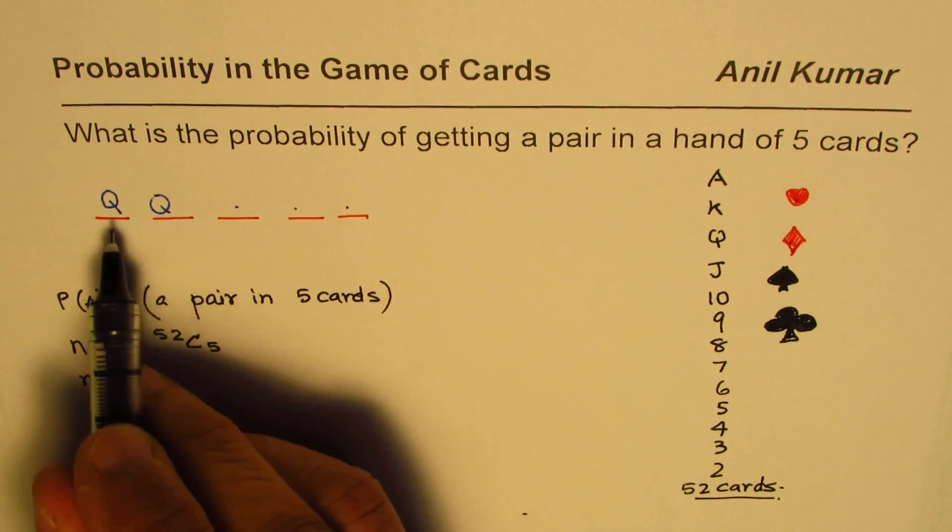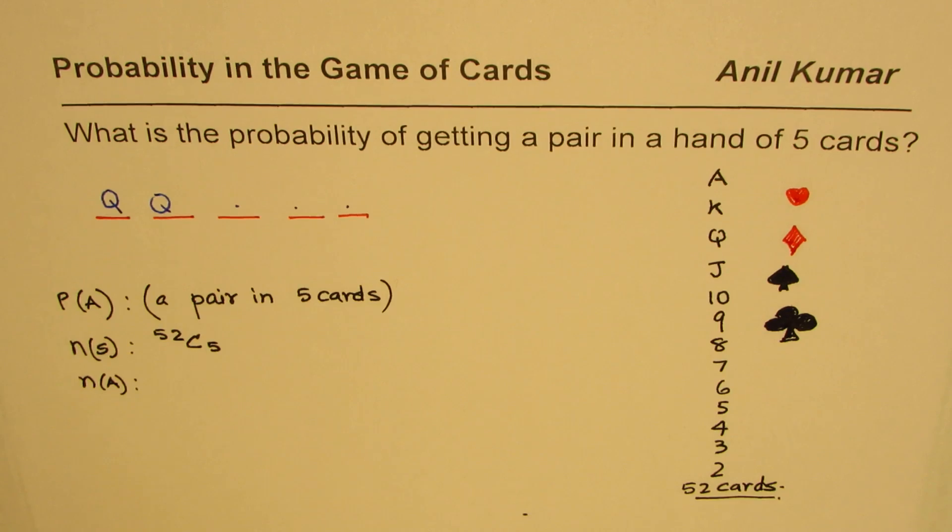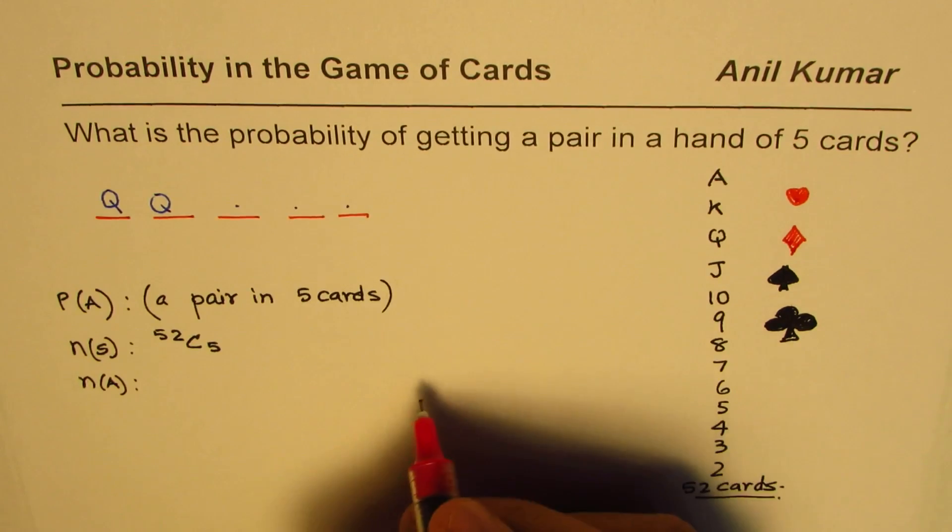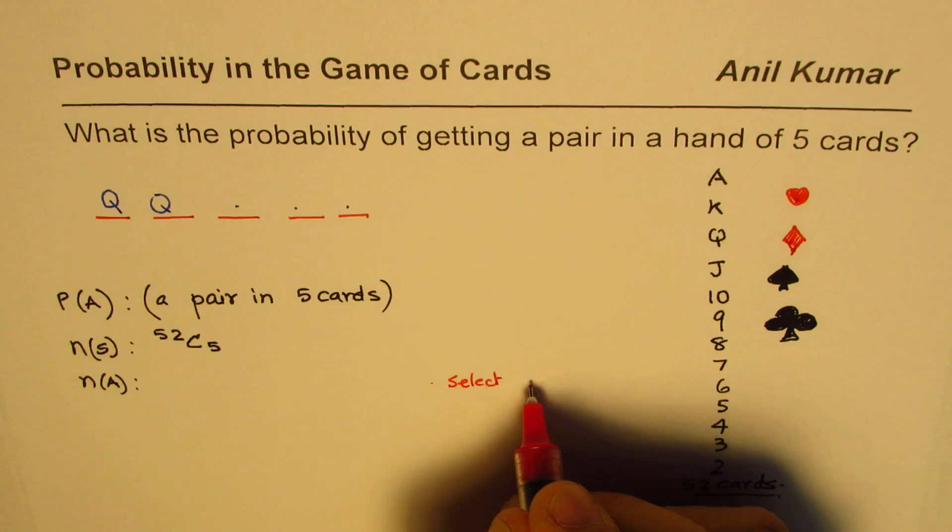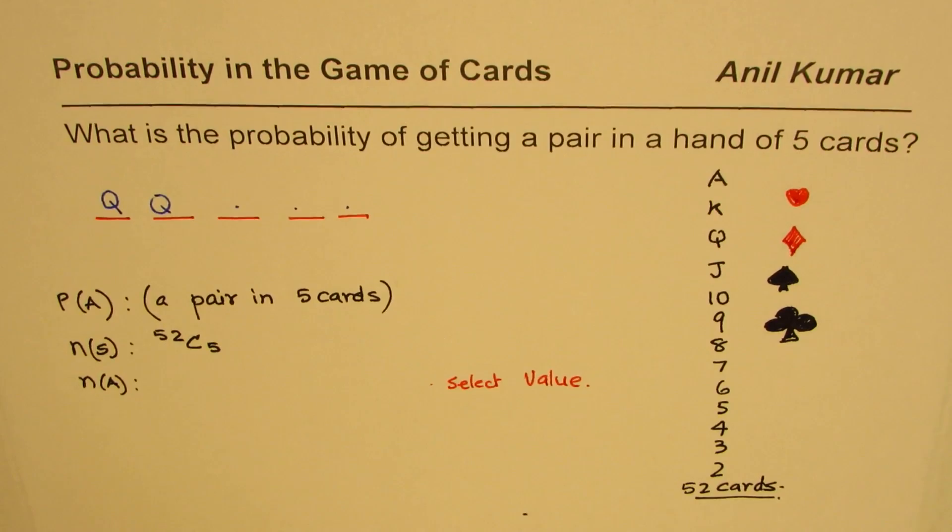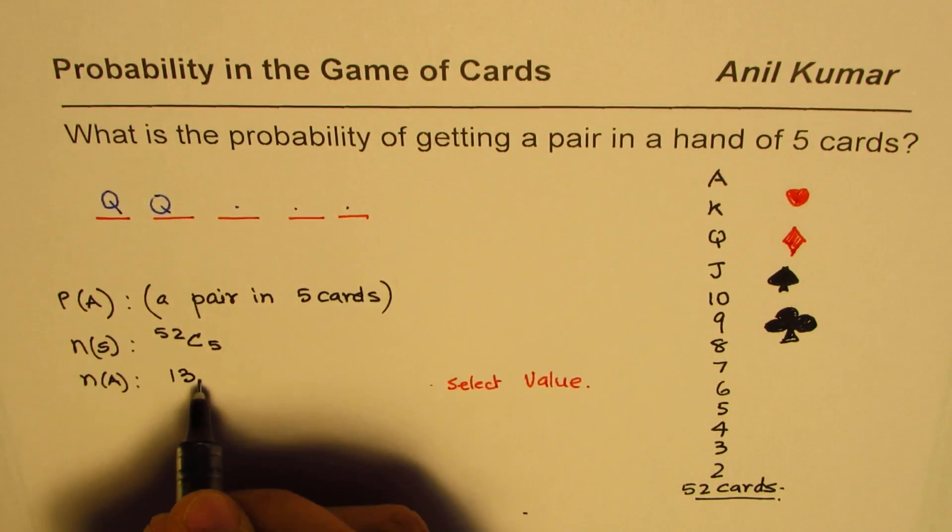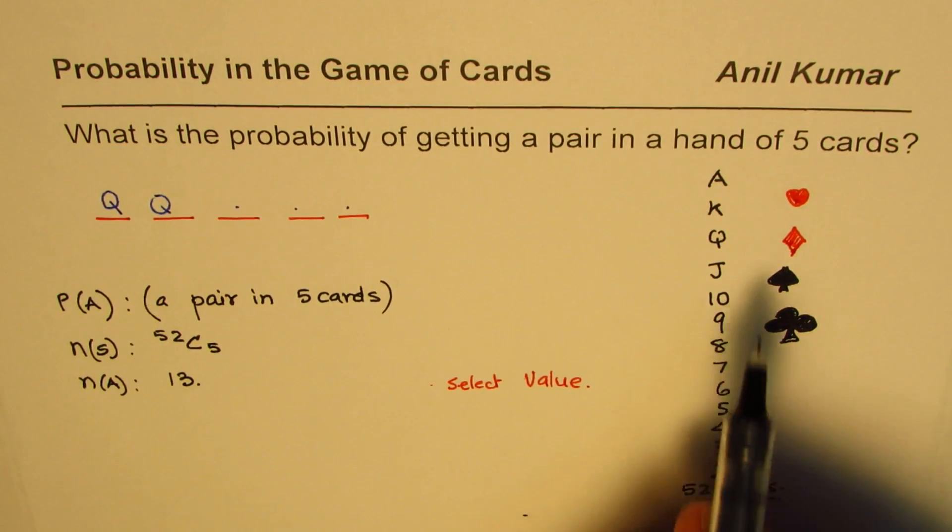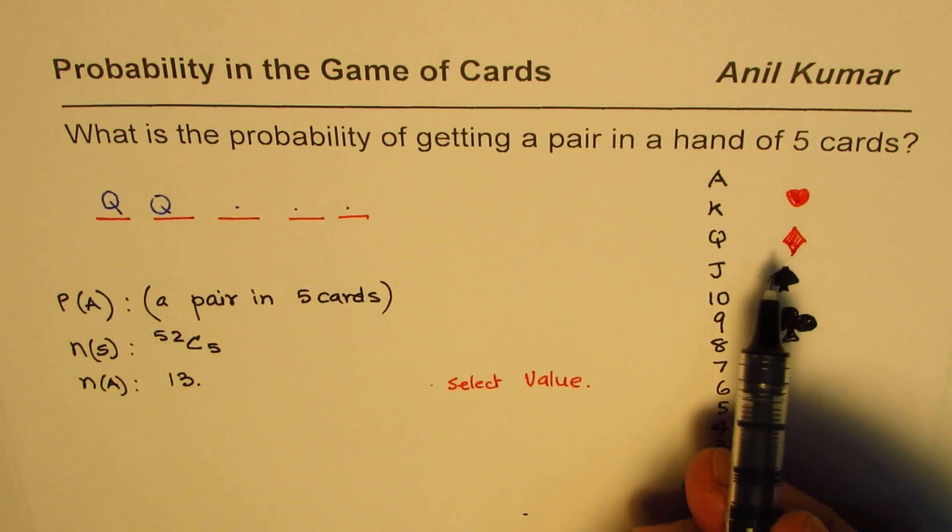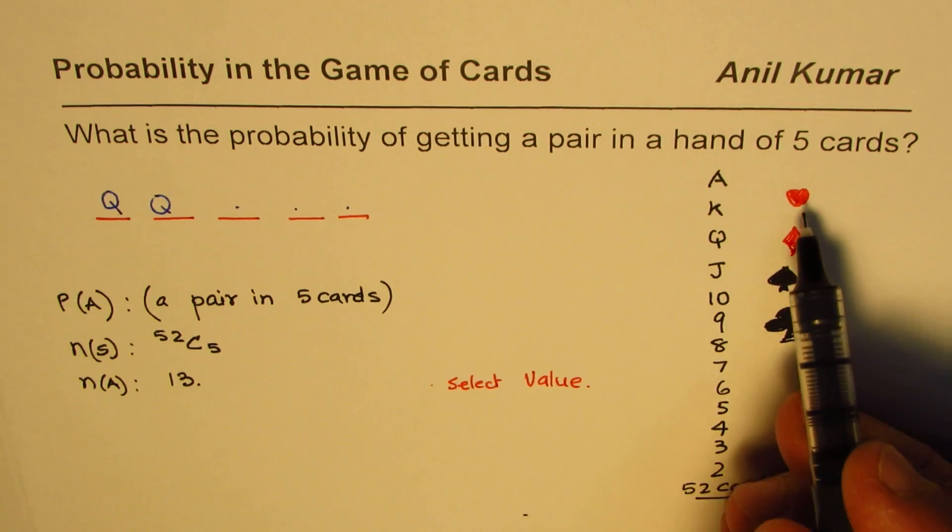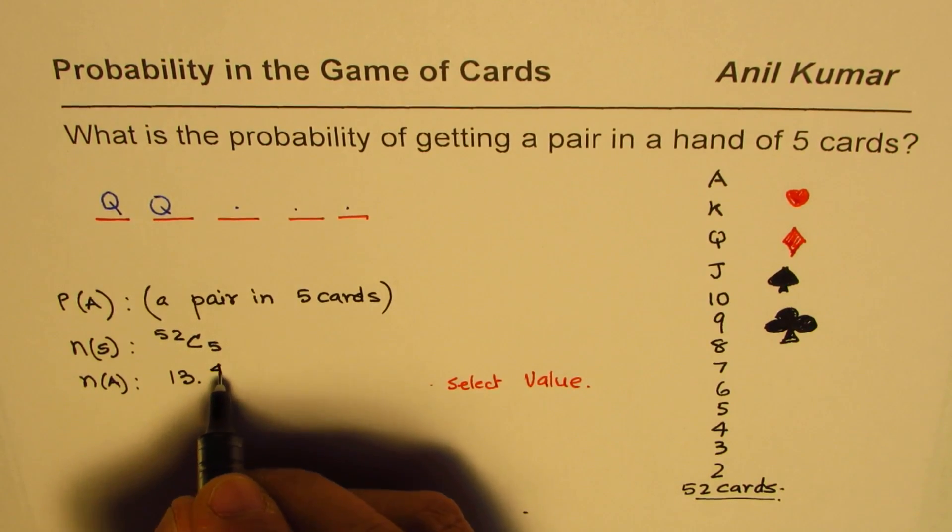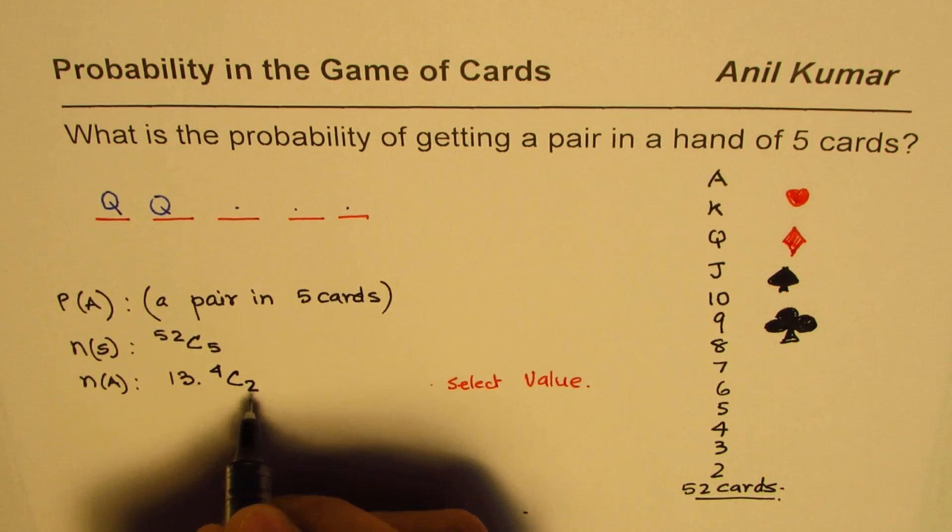Now we need to find favorable options to get a pair. The first step is to figure out what value of card you need. Since there are 13 cards, we have 13 choices. Out of these 13 choices, we want two of the same kind. If we select queen, there are four of these, so we have a choice that out of four we could select two. Out of four we could select two queens, so that becomes a pair.